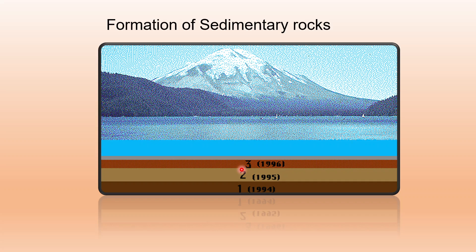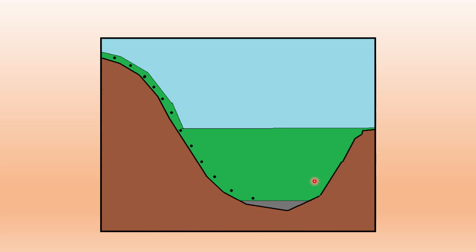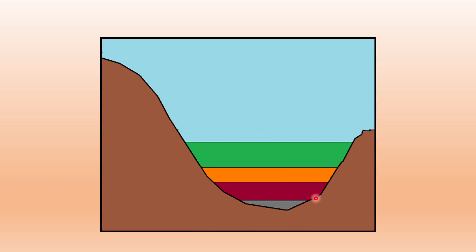Next we learn about sedimentary rocks. As the name suggests, sedimentary rocks are formed by sediments deposited in a river, a lake, or any other water body. They get deposited in layers which get compacted and become hard to form sedimentary rocks. Here we can see how the sediments are getting deposited in a water body layer after layer, and these top layers begin to put a lot of pressure on the underlying layers, compressing them and turning them into rocks.